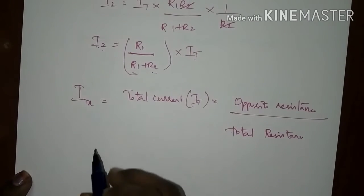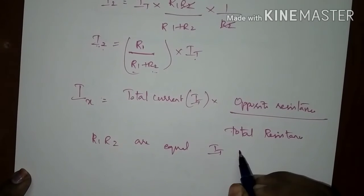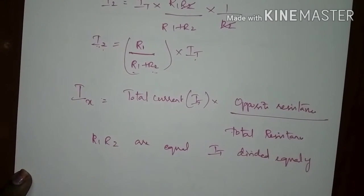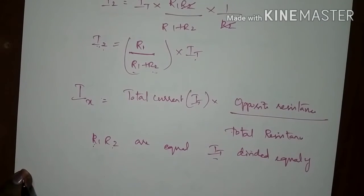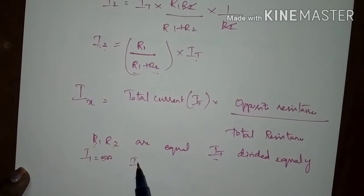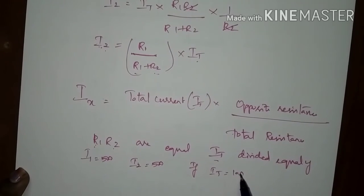If the two resistances R1 and R2 connected in parallel are equal, then the total current is divided equally between them. For example, if total current is 10 amps, then the current through R1 would be 5 amps and I2 would be 5 amps. So when R1 equals R2, the current is divided equally between the two branches.